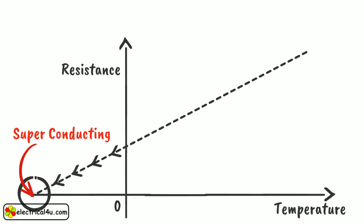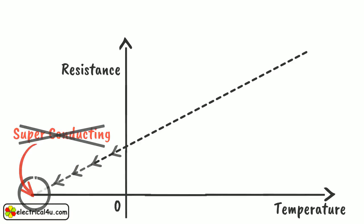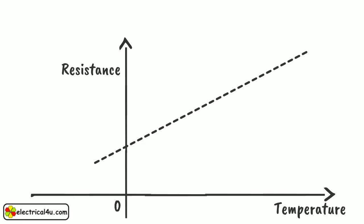Conducting with no resistance at all. This condition is not practically possible. No conductor can get zero resistance property. Hence, this graph will not touch the horizontal axis.